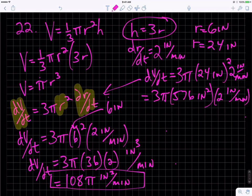So then we've got 576 times 6 is 3456π inches cubed per minute.